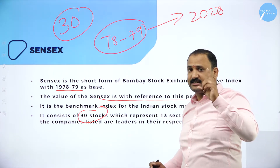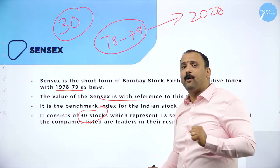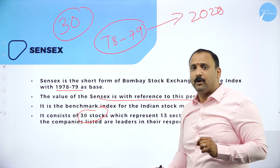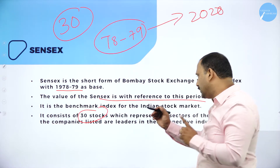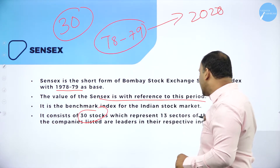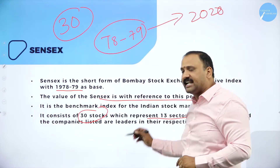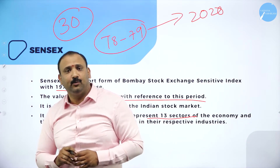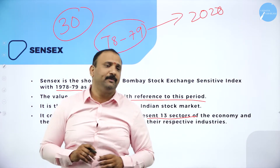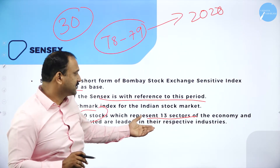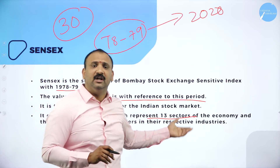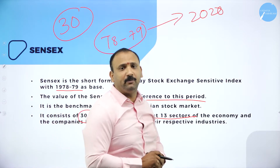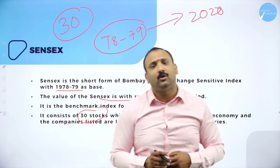Not to forget, Sensex is a very important index and a very big important mover altogether. It has 13 sectors — 13 large sectors on which the entire Bombay Stock Exchange works, and that is how the respective industries are able to make their movement altogether.